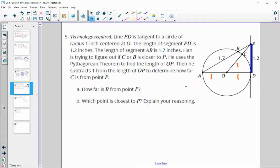Hahn is trying to figure out if C or B is closer to P. He uses Pythagorean theorem to find the length of OP, then subtracts 1 from the length to determine how far C is from P. So let's finish doing what Hahn originally said. So he's using this triangle here and doing Pythagorean theorem. So OP squared equals 1 squared plus 1.2 squared, since those are the legs of this triangle. And so OP squared is equal to 1 plus 1.44. So OP squared is equal to 2.44.